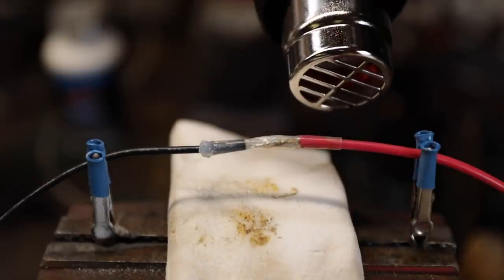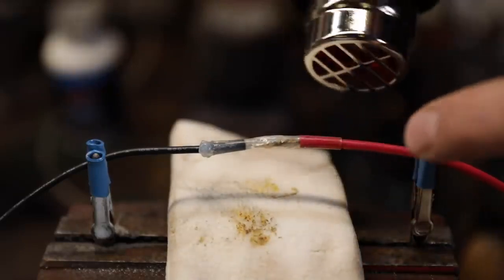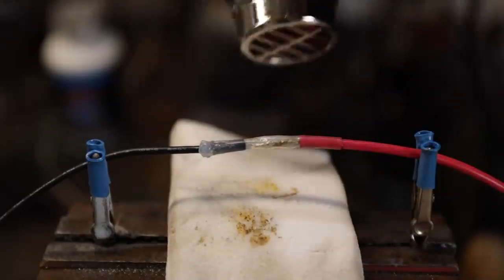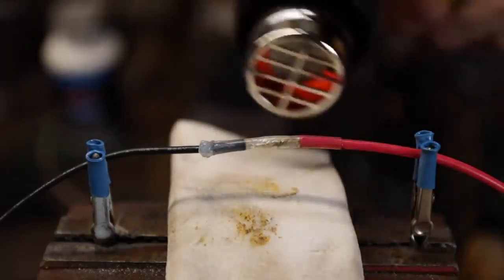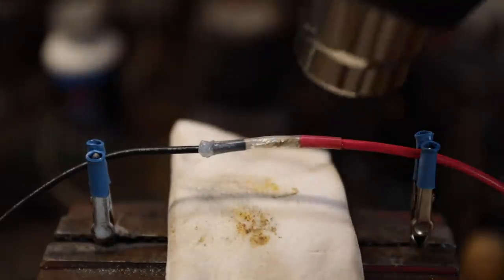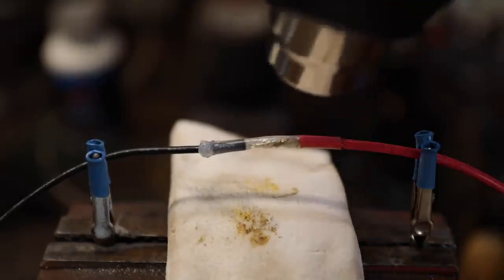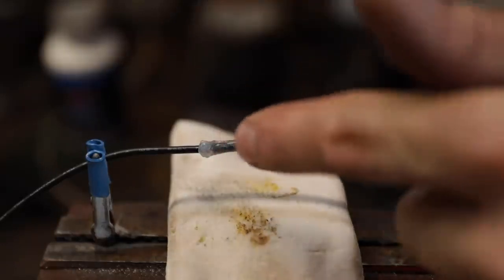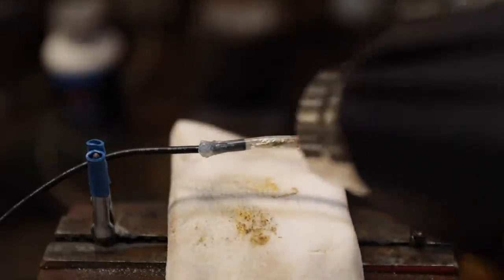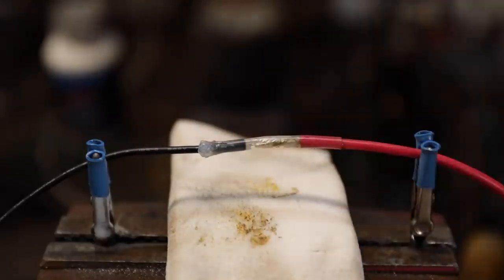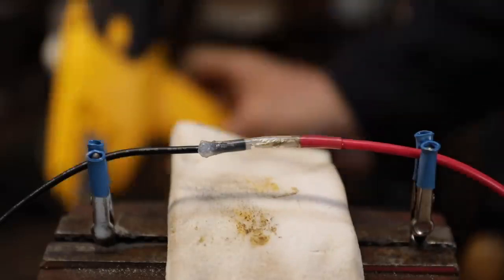You'll see that silicone making that seal as the shrink tape tightens around the connection. Ideally you want it to squeeze out like that side right there. Probably should have put a little bit more on the housing, but that looks pretty good right there actually.